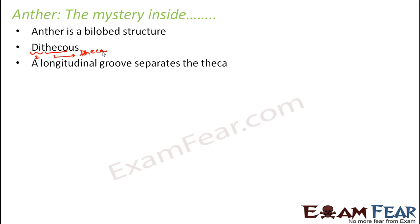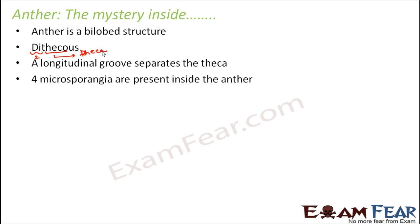A longitudinal groove separates the theca. So what separates the two sac-like structures is a groove-like structure. Now, there are four microsporangia present inside the anther. Micro means small, and sporangia represents a structure that produces spores, and these spores can give rise to the male gametophyte.